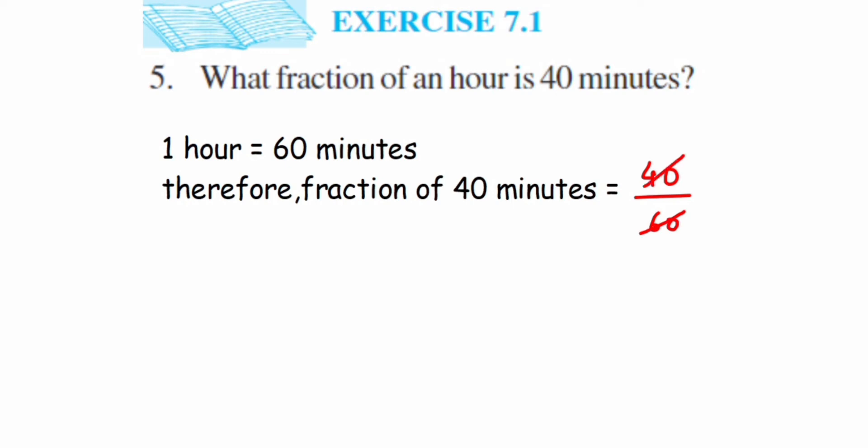We can cancel this in the 10 table or any table. I'm going to cancel this in 20 tables—2 twos are 4, 2 threes are 6. Or you can simply cancel the zeros and cancel the 4 and 6 to get 2 upon 3.